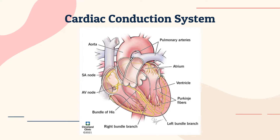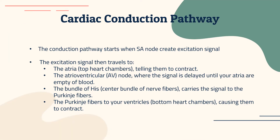During cardiac surgery, there are many times that the cardiac conduction system can potentially be damaged or have inflammatory processes postoperatively that can lead to issues with pacing. The conduction pathway starts when the SA node creates an excitation signal. This signal travels to the atria telling them to contract, then goes to the AV node where the signal is delayed until the atria are empty of blood, then travels to the bundle of His carrying the signal to the Purkinje fibers, which carry it to the ventricles causing them to contract.